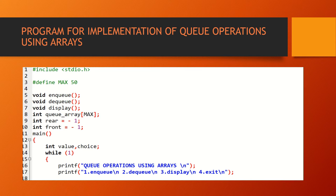voidNQ, voidDQ, and voidDisplay are the queue operations. int queue array of MAX — the queue is created here. int rear is equal to minus 1, int front equal to minus 1, which indicates that the queue is empty.